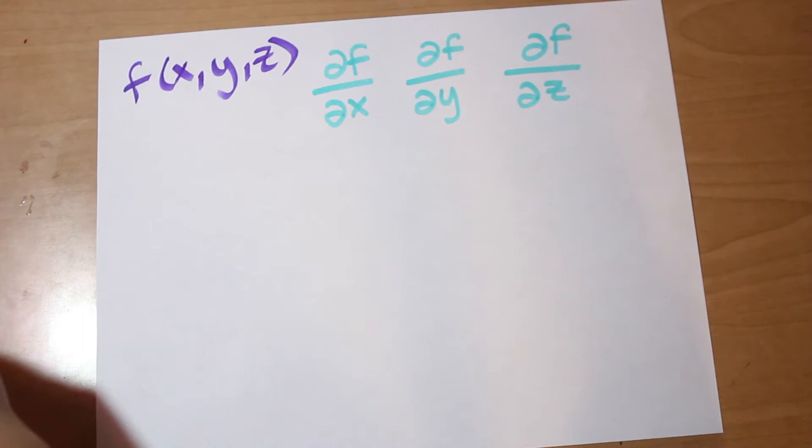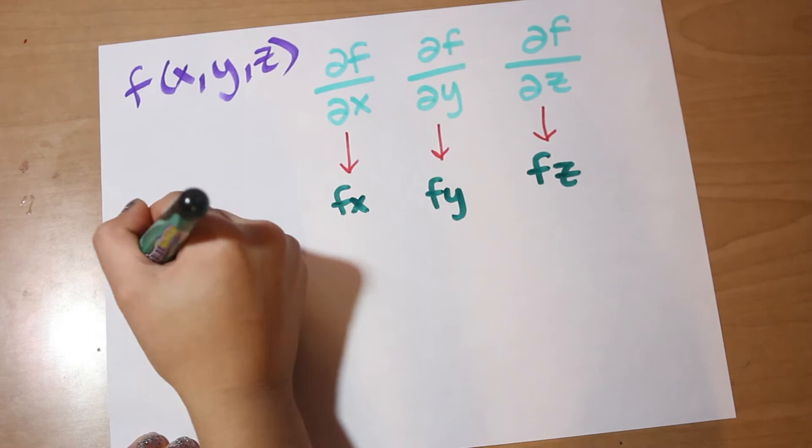Let's call them fx, fy, and fz. We can put these in a vector to get that line n we were looking for. Nice!